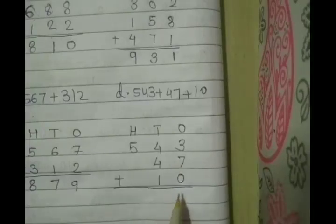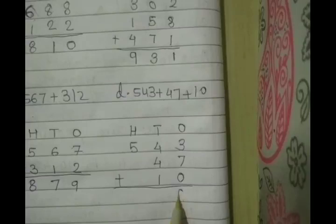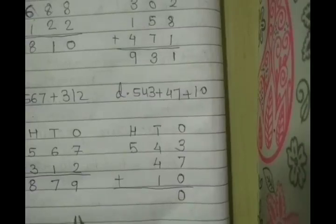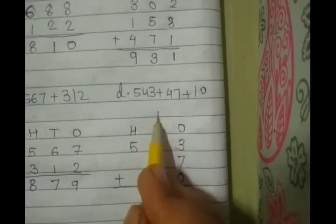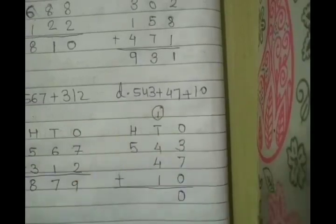7 plus 3, 10 plus 0, 10. So you write down 0 in ones column. Carry forward 1 in a tens column.